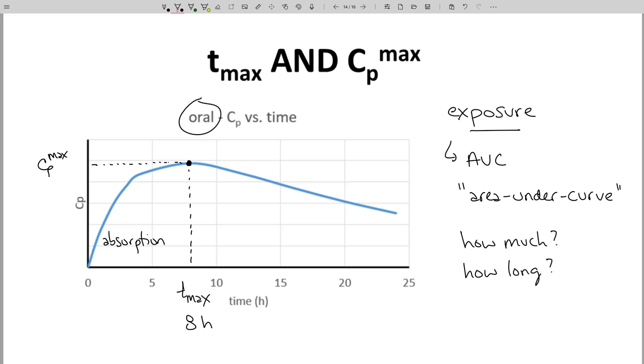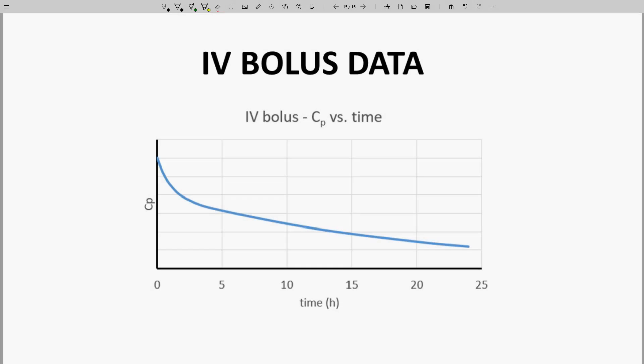Is CPmax relevant for molecules dosed by IV bolus? It can be. Here is the CP time curve for IV dosing. Note that the CP peaks – we hit CPmax at the time of the injection. In the first instant, the entire dose is in the central compartment – the circulatory system, the plasma. Most molecules quickly distribute, so CP quickly drops to a degree as the elimination phase begins.